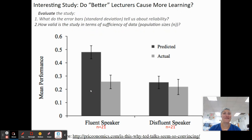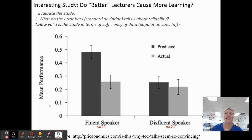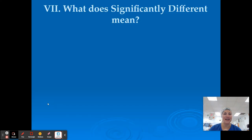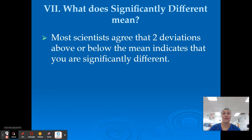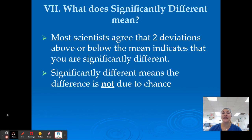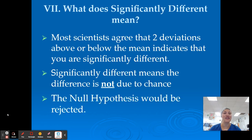Isn't that crazy? So what do these error bars tell us about reliability, and how valid is the study in terms of population sizes? What do the means mean? Most scientists agree that if we have two deviations above or below the mean, you are going to be statistically different from each other and the difference is not due to chance. So if the error bars don't overlap, that difference is not due to chance, and we reject the null hypothesis that those two values are the same.